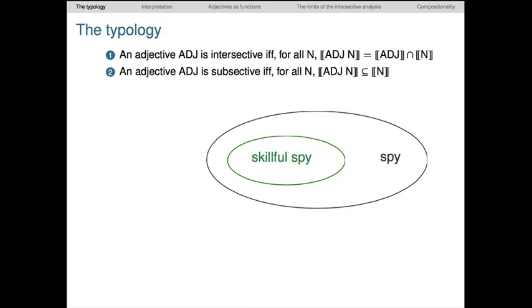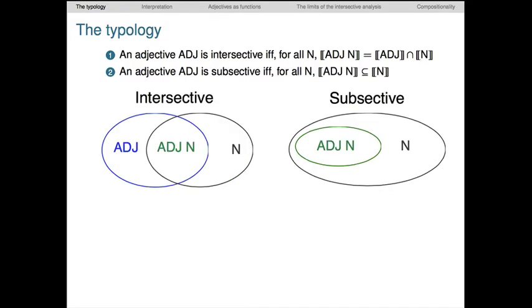It's important to note that by these two definitions, intersective adjectives are just special kinds of subsective adjectives. This is true because of the set theoretic principle that says for any sets A and B, A intersected with B is a subset of A, and A intersected with B is a subset of B. So all intersective adjectives meet the subsective requirement.